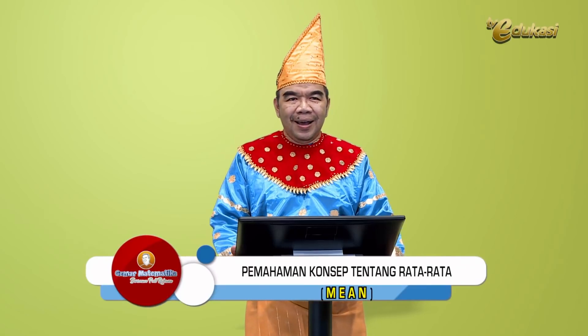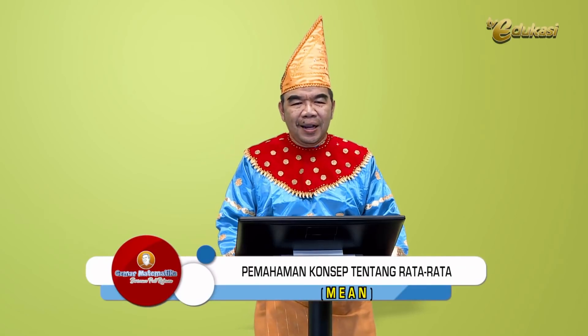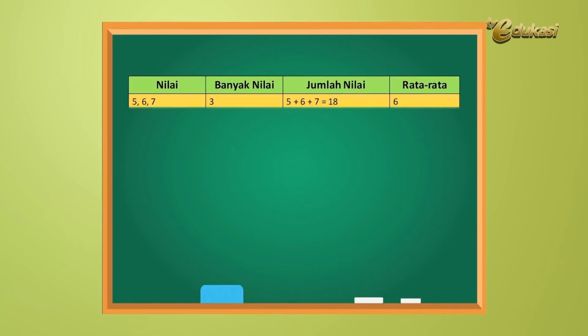Baik, anak-anak, Bapak akan menerangkan pemahaman konsep tentang rata-rata. Perhatikan tabel berikut. Nomor 1, nilai 5, 6, dan 7. Banyaknya nilai 3. Jumlah nilai 5 tambah 6 tambah 7 sama dengan 18. Rata-ratanya 6.